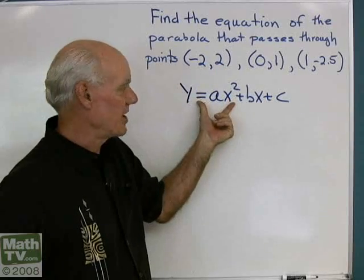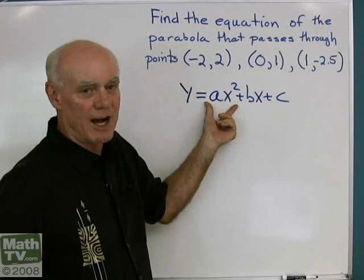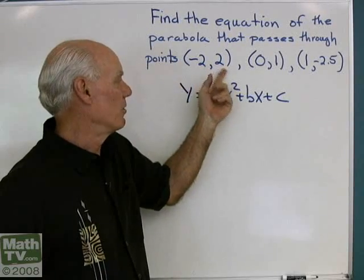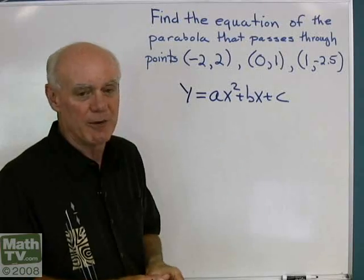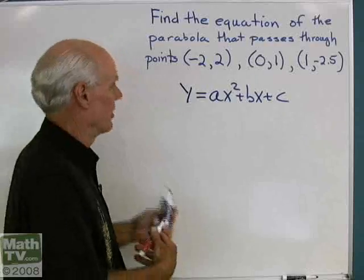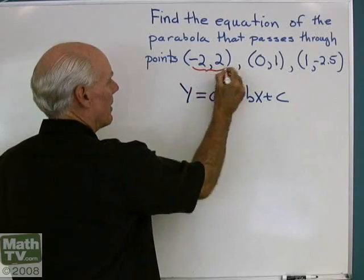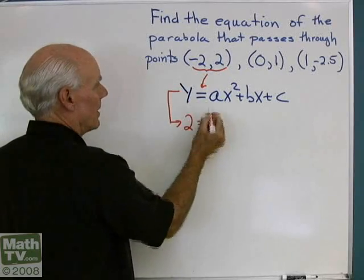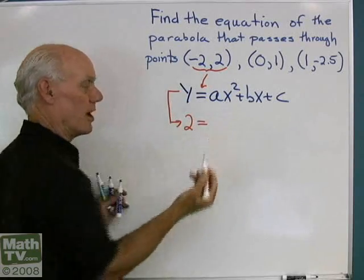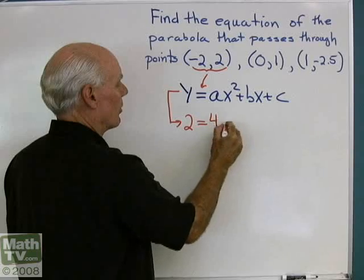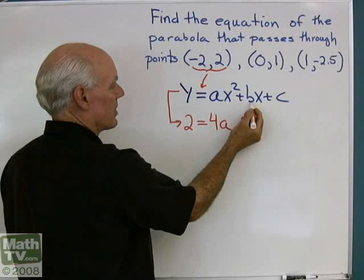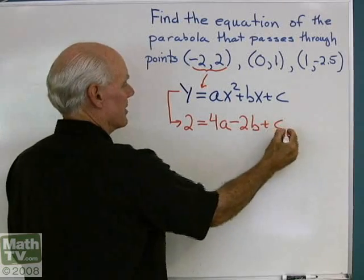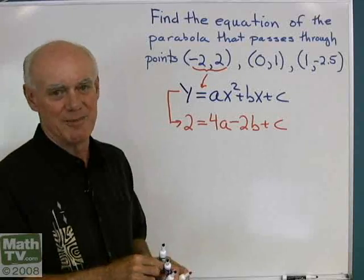This ordered pair right here must satisfy this equation if that point is on this graph, so I'll substitute in these coordinates — x equals negative two, y equals two — into this equation, and I'll find a relationship between a, b, and c. y is equal to two, x is equal to negative two, so x squared is positive four, giving a times four which is 4a. x is negative two, so I have b times negative two which is negative 2b, and then plus c. So there's one relationship between a, b, and c.